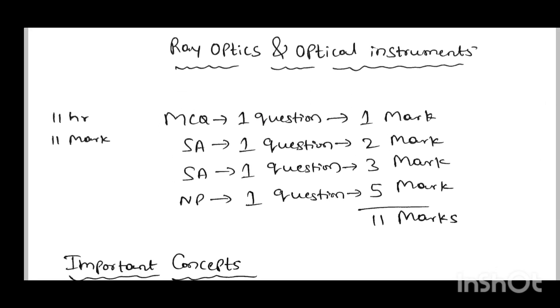This chapter has 11 hours and 11 marks. These 11 marks are distributed in several sections: one MCQ question carrying one mark, one essay type question carrying two marks, one short answer type question carrying three marks, and one numerical problem carrying five marks, totaling 11 marks from this chapter.